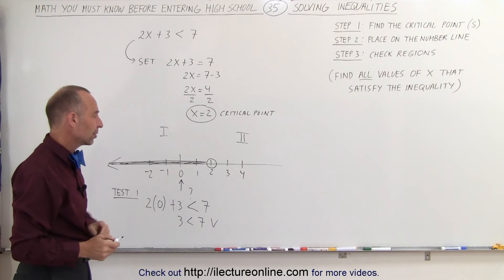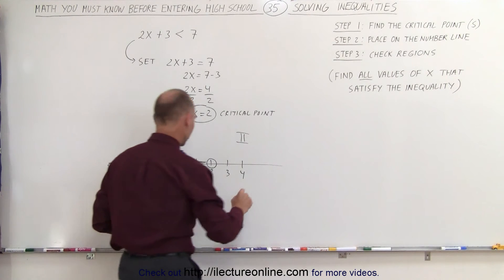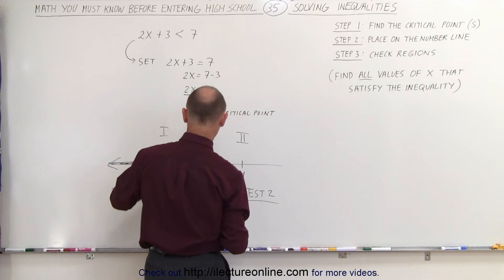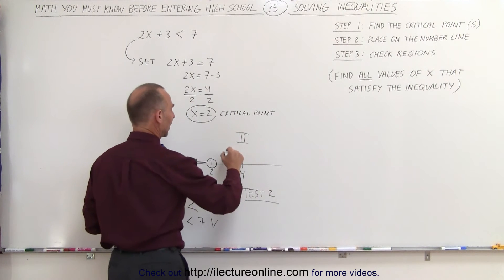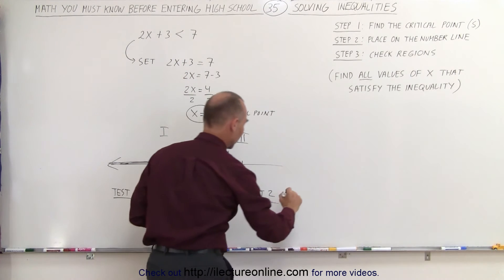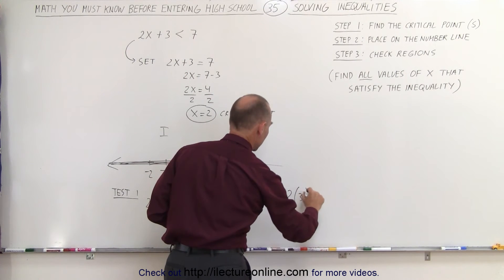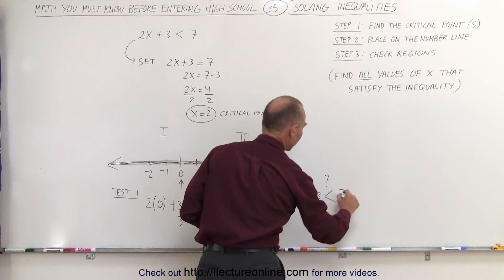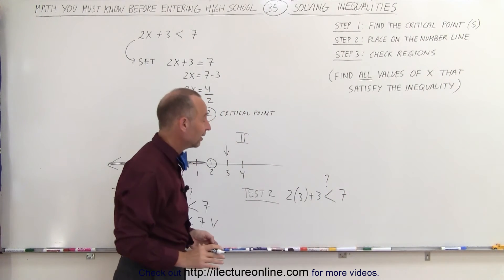Now let's try a point from the other side. So we're going to check test number 2. And here we're going to plug in another value. Let's say the value of number 3. Let's plug in 3 in for x and see what we get. So 2 times 3 plus 3 is at less than question mark than 7 because we don't know. We're trying to find out.